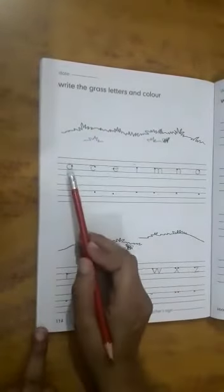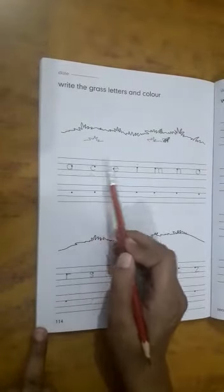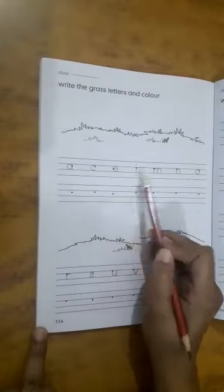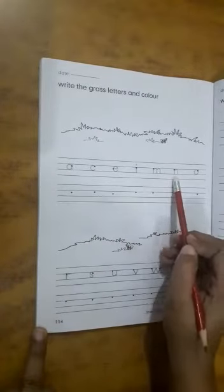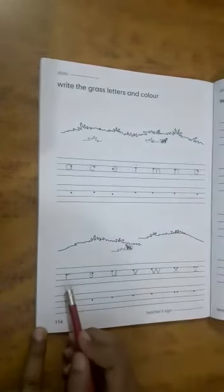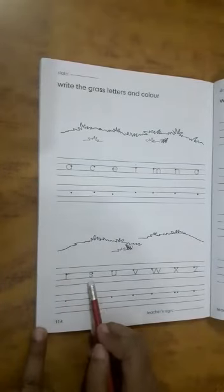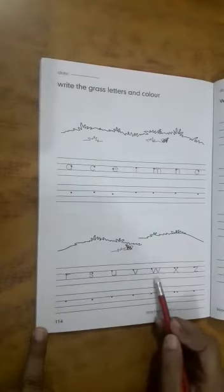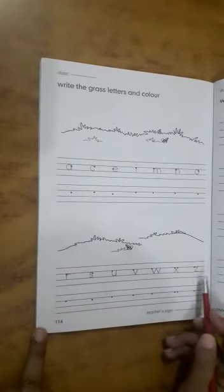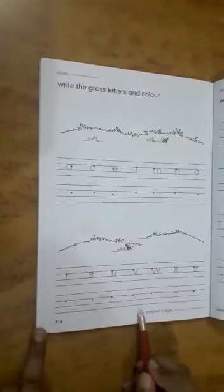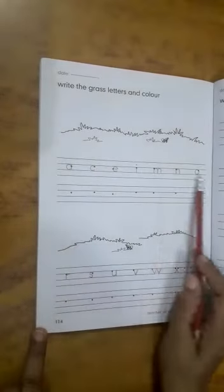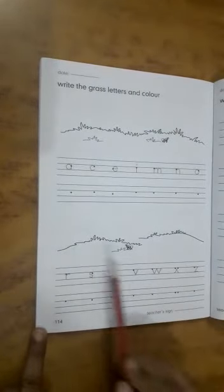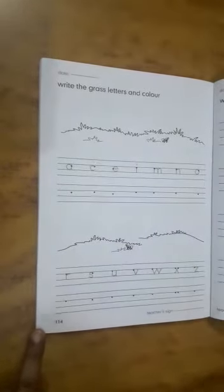read with me. A, C, E, I, M, N, O, R, S, U, V, W, X, Z. Now students, you write these grass letters and colour this picture. Okay?